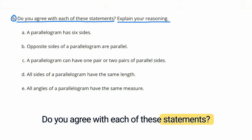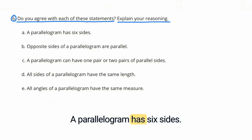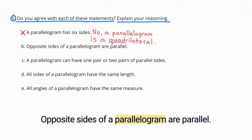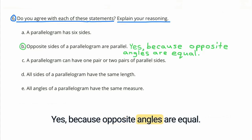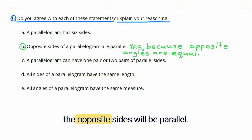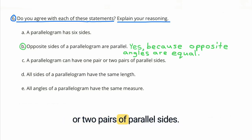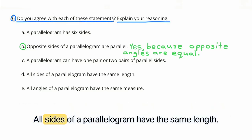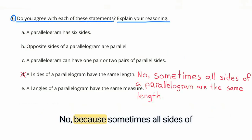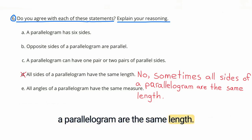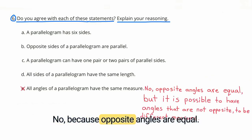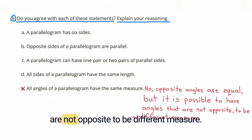Problem 6: Do you agree with each statement? A: A parallelogram has 6 sides — No, because a parallelogram is a quadrilateral with 4 sides. B: Opposite sides of a parallelogram are parallel — Yes, because opposite angles are equal, and if opposite angles are equal, the opposite sides will be parallel. C: A parallelogram can have 1 or 2 pairs of parallel sides — No, parallelograms always have 2 pairs of parallel sides. D: All sides have the same length — No, because only sometimes are all sides equal. E: All angles have the same measure — No, because opposite angles are equal, but non-opposite angles can differ.